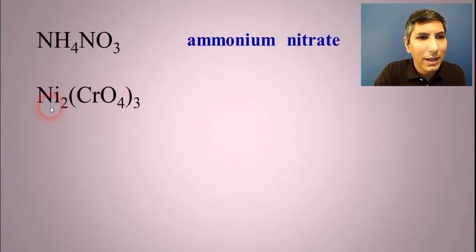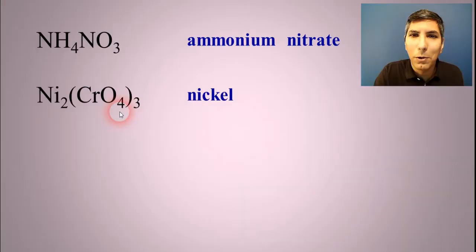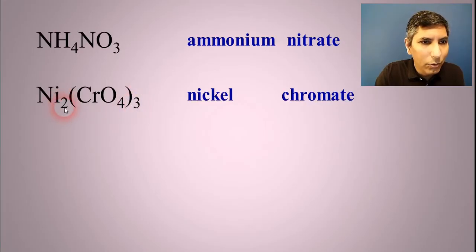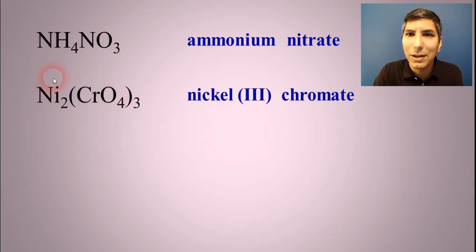How about this one? We have Ni. Well, that looks like nickel, doesn't it? And then the CrO4 is called chromate. And nickel is a transition metal. So we unswap the charges. And this two tells us that the chromate was a minus two. And the three right here tells us that that nickel was a plus three. So that's why it's called nickel(III) chromate.